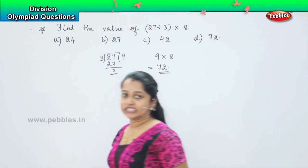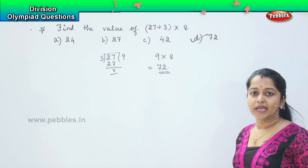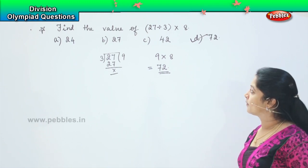So where can you find 72 children? Yes. Option D. So option D is my right answer. Got it?